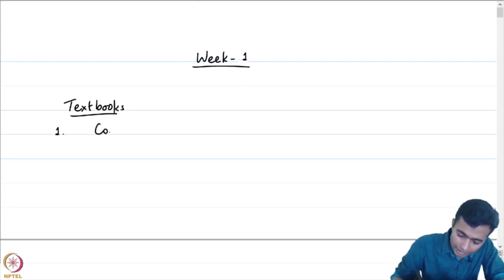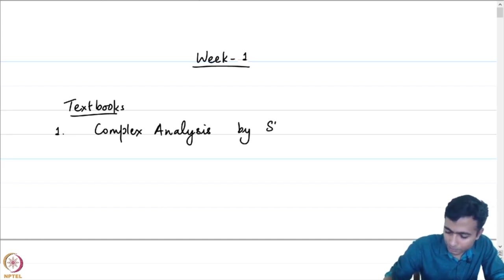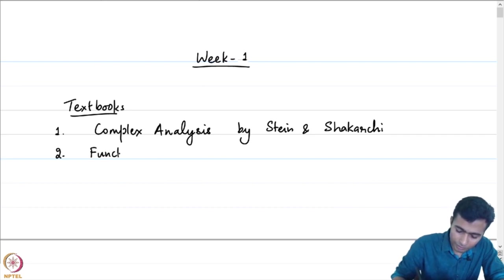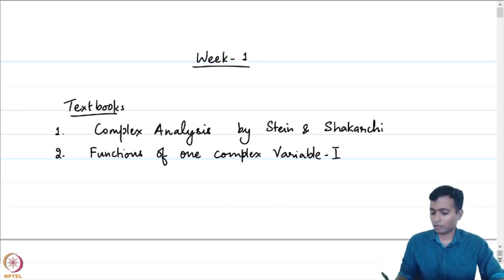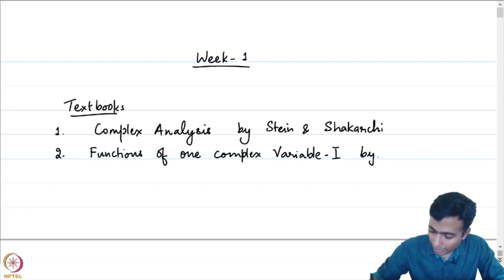The first one being Complex Analysis by Stein and Shakarchi. The second is titled Functions of One Complex Variable. There are two parts in this book, and the material we will cover will be found in the first part. It is by John B. Conway.